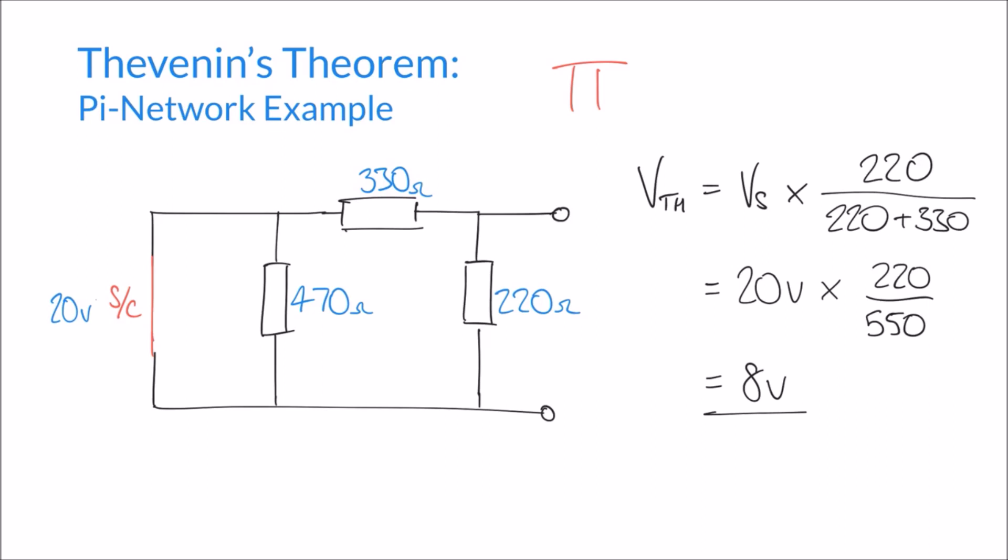First of all, starting at the top terminal, we immediately split in our path. We can go this way through the 330 ohms, or this way through the 220 ohms. So because there's a split there, these two resistors must be in parallel.